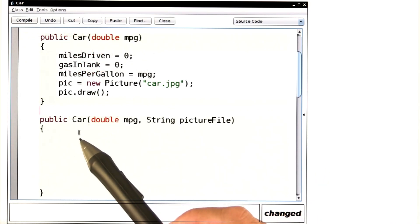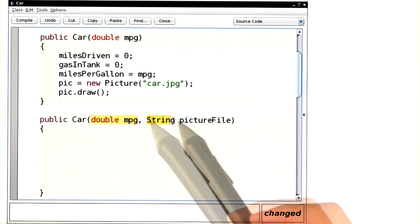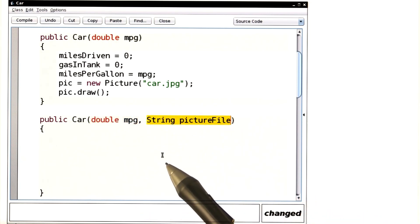I'd like you to write another constructor that takes two arguments, the fuel efficiency and the picture file to be used. Go ahead and do that in the coding environment and submit your answer.